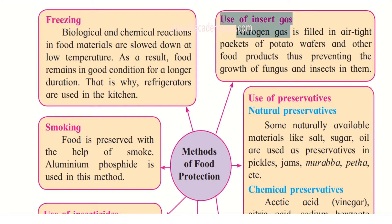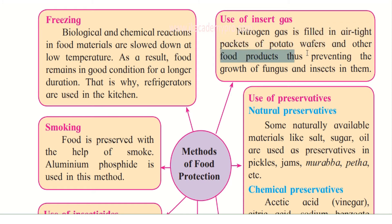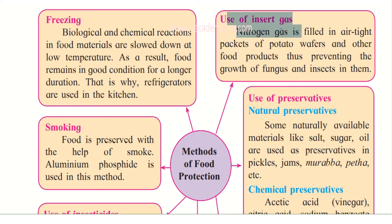The second method is use of inert gas. Nitrogen gas is filled in airtight packets of food wafers. You know those packets of kurkure, wafers, and chips that you buy? They are puffed up like a balloon, and when you open them you find hardly any chips inside. This is so that the potato chips remain fresh — they do not get soft or spoiled. They are filled with nitrogen gas, thus preventing the growth of fungus and insects. This is how snack items are protected using inert gas, that is, nitrogen gas.